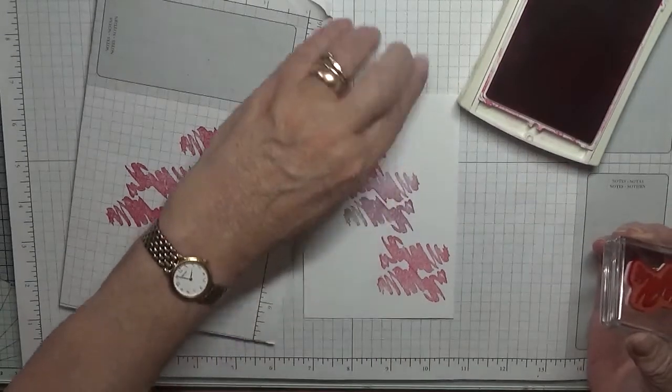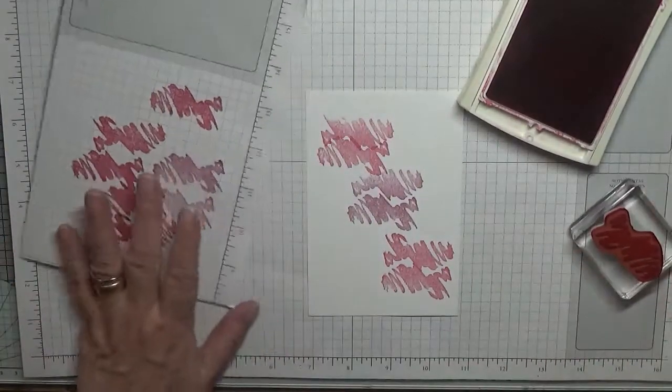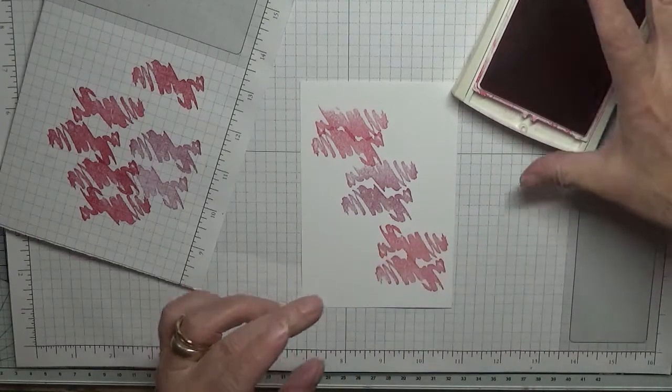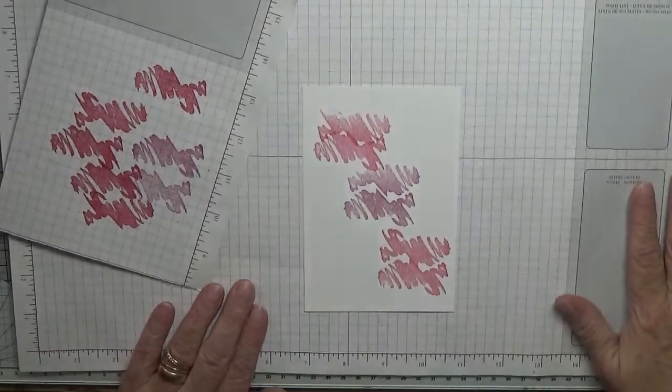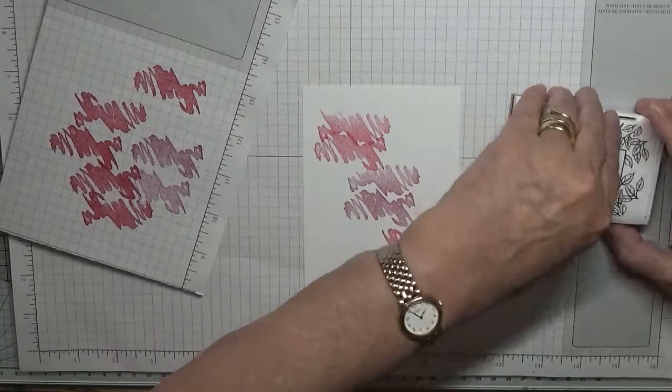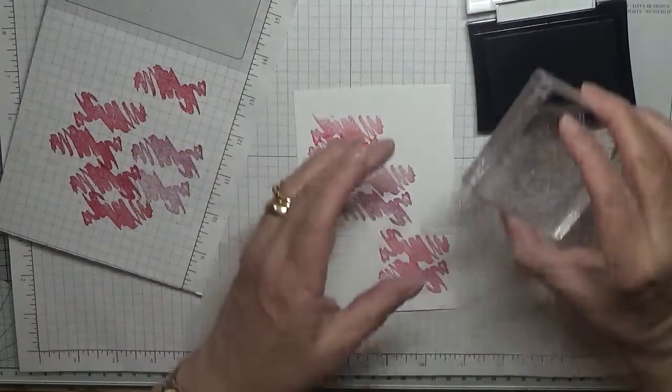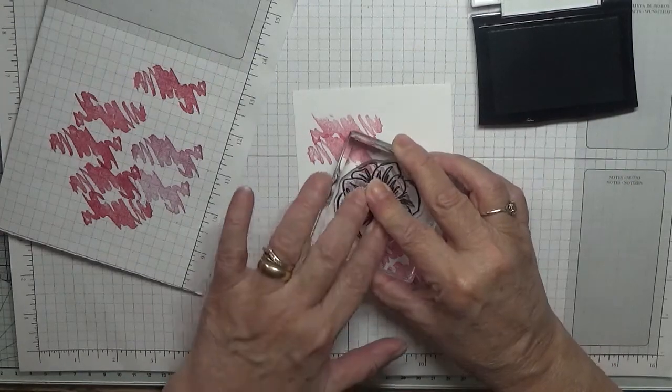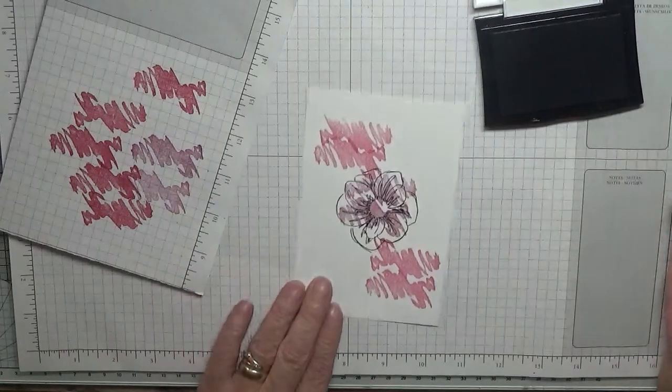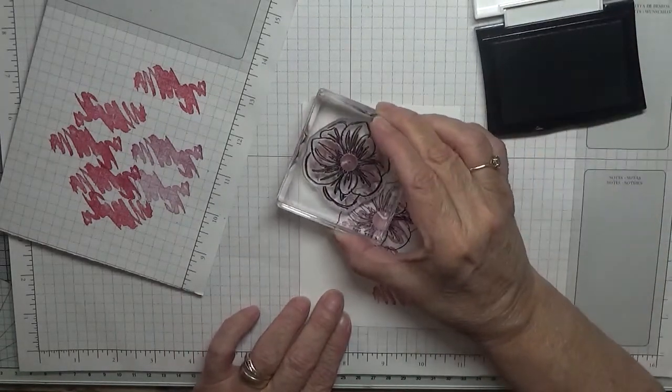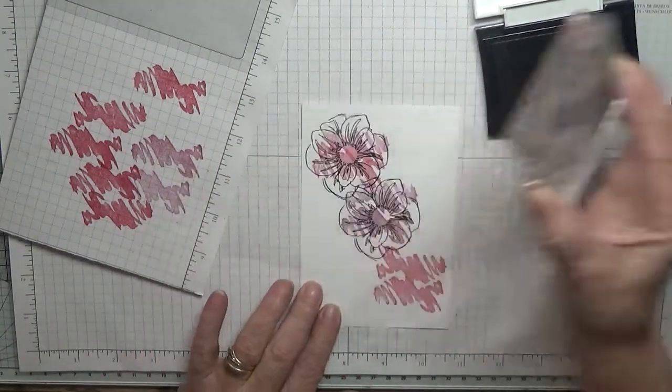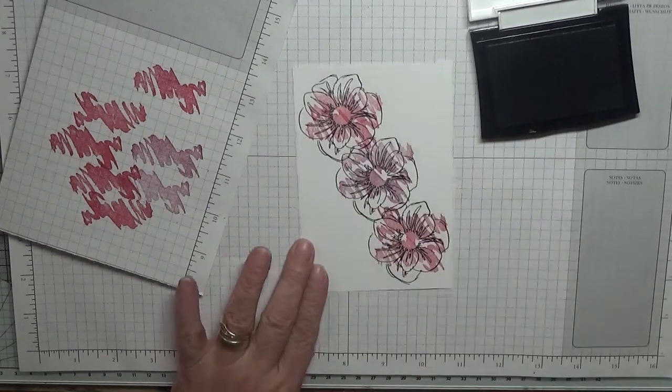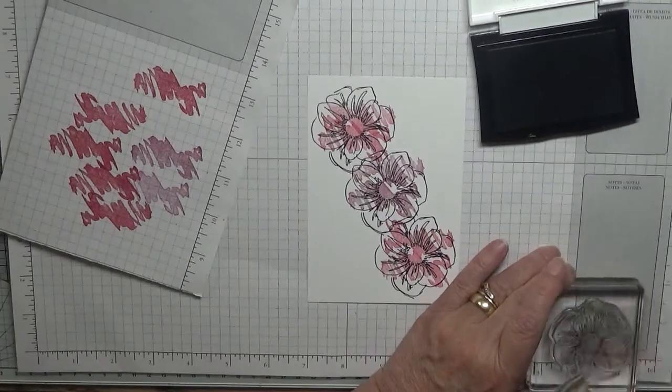That's all we need for the bits on this. We're finished with the melon Mambo. What we need now is our VersaFine black ink and our flower stamp from Floral Essence. What we're going to do is just stamp over our colored part so it looks like it's colored the flowering, and again up here, and again here. Clean the stamp.